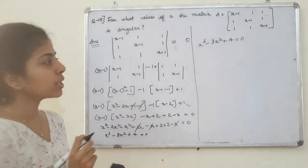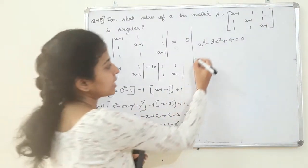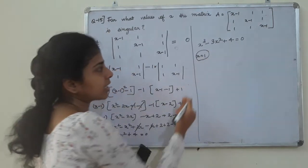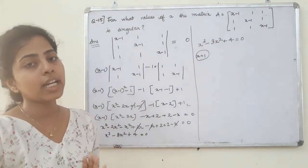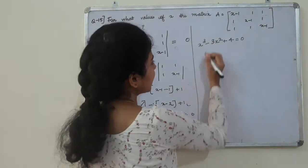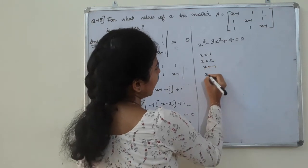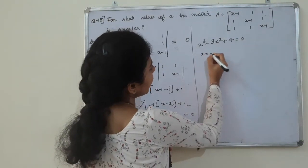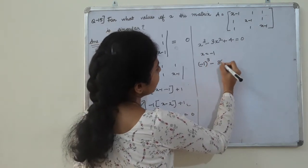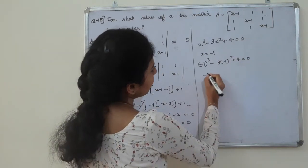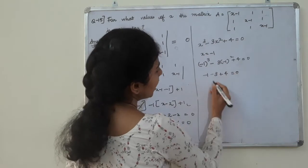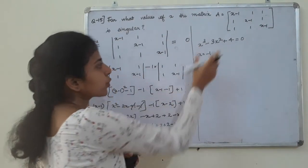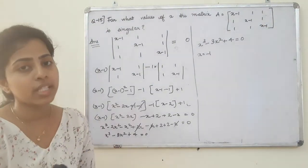We need to find a root. We try x equal to minus 1: substitute into the cubic. That gives minus 1 minus 3 plus 4, which equals 0. So x equal to minus 1 is a root. Now we can factor out x plus 1.